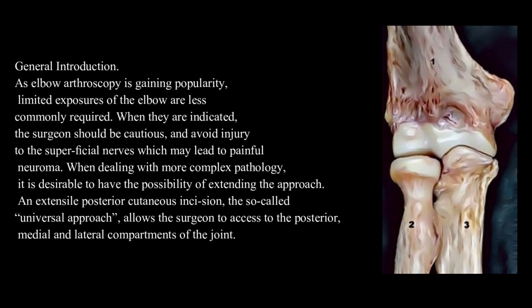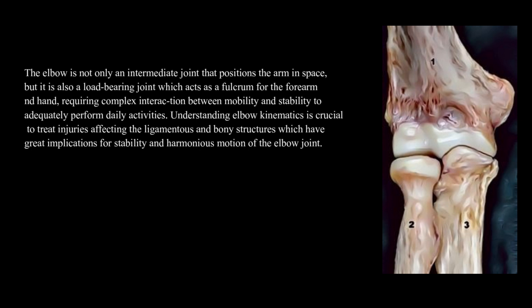allows the surgeon to access the posterior, medial, and lateral joint. The elbow is not only an intermediate joint that positions the arm in space, but it is also a load-bearing joint which acts as a fulcrum for the forearm and hand, requiring complex interaction between mobility and stability to adequately perform daily activities. Understanding elbow kinematics is crucial to treat injuries affecting the ligamentous and bony structures, which have great implications for stability and harmonious motion of the elbow joint.